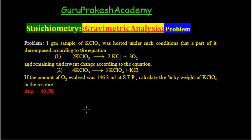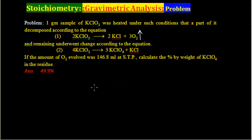We have to calculate the weight of all the residue. The residue contains KCl and KClO₄. Oxygen is a gas, so in the residue you will not have oxygen. The first task is to find the weight of all these species. So first, find the moles of O₂ we have.